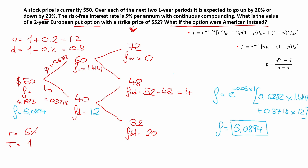To summarize: for American options, the option values change depending on whether it's optimal to exercise early. If early exercise is optimal, you update the option value at that node, then recalculate the current option value using the same formulas as before.